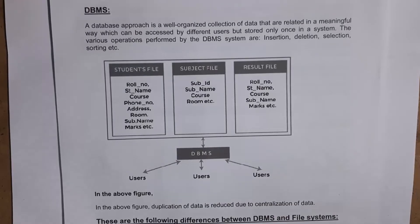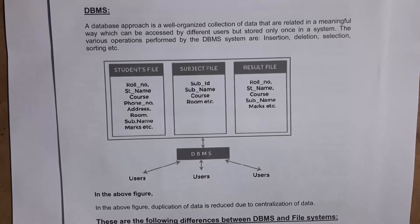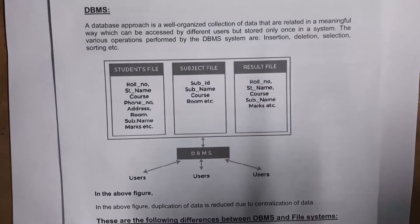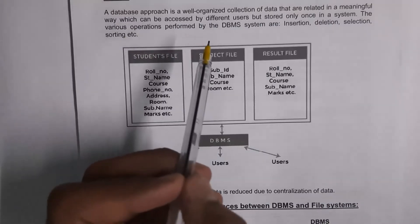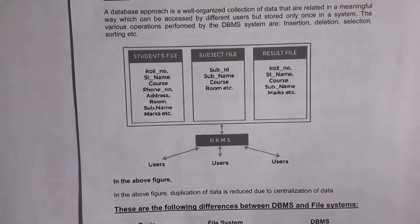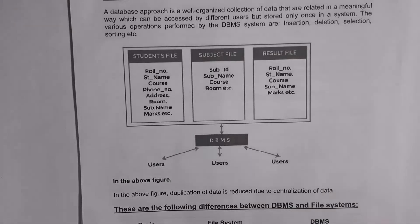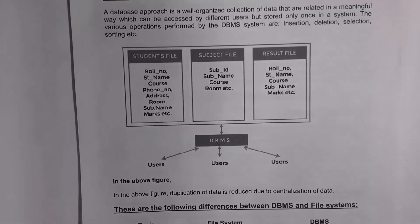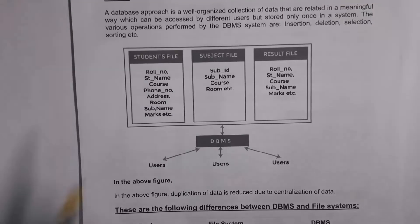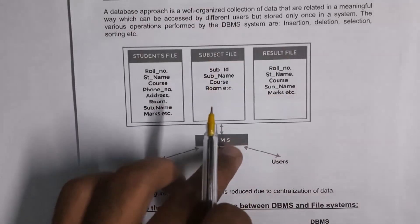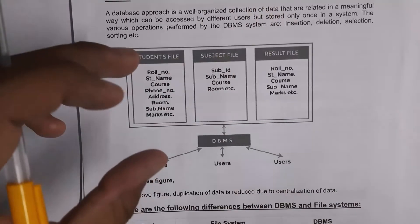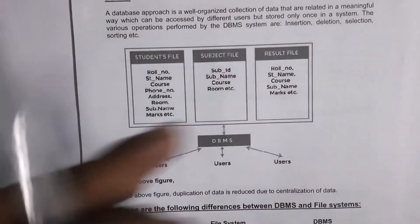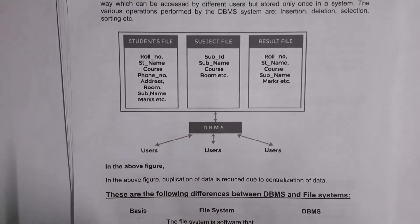In a database, we store data in organized format — all names in one place, roll numbers in one place, and so on. We store this data in table format, which is very easy to access. Multiple users can use the database at a time, and all the data they store is kept in a single database. The various operations performed by a DBMS system are insertion, deletion, selection, sorting, and more. Using DBMS software, we can create tables, insert data, delete data, modify and update data, and so on.